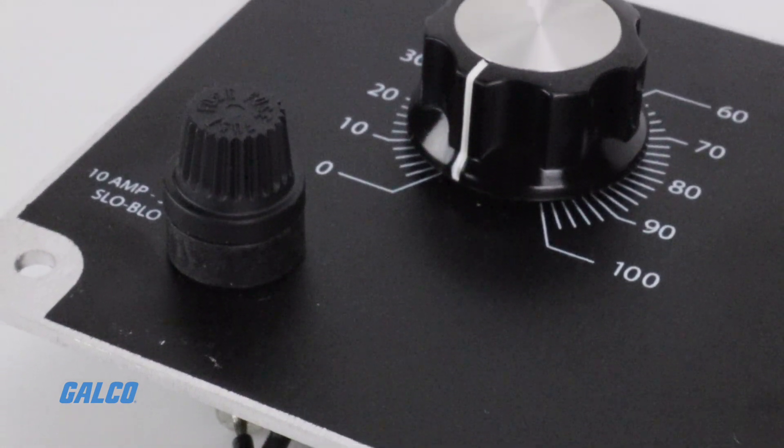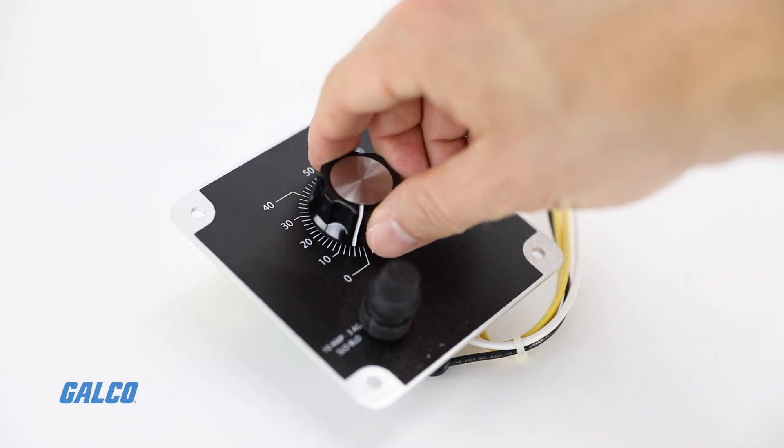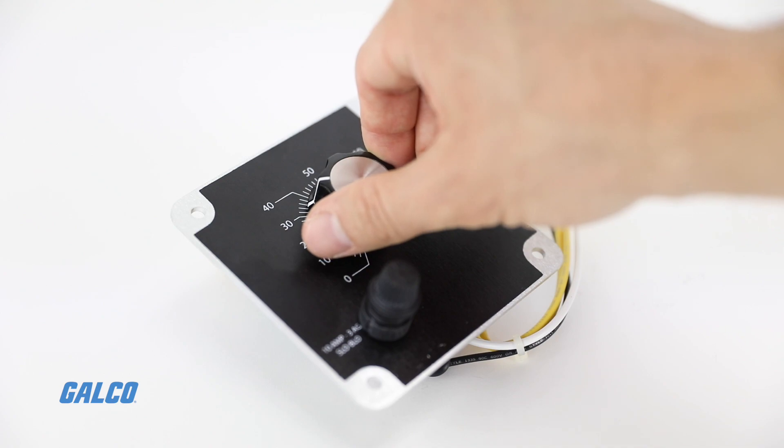TA101P drives feature simple speed pot operation with on, off and motor speed adjustment all accomplished with a front facing dial.